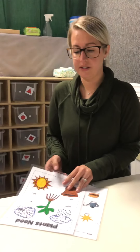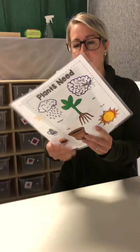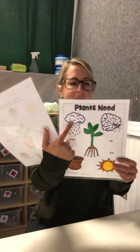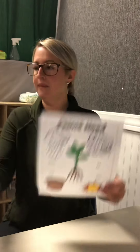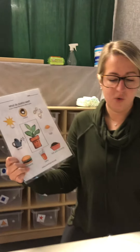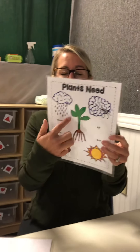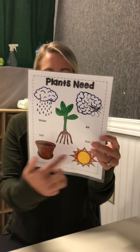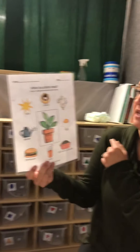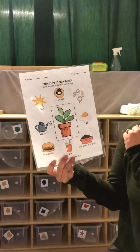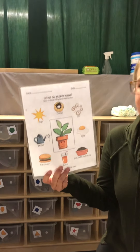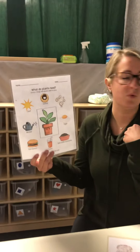For our circle activity today, what you should have are these two sheets. This one says 'Plants Need' and 'What Do Plants Need' over here. We're going to talk about what plants need, then do this activity — picking out all the things that plants need and putting big X's on the things that plants do not need.